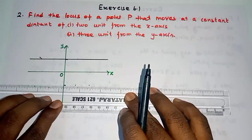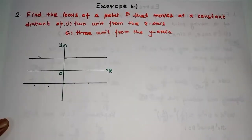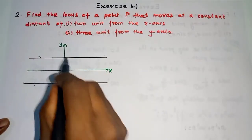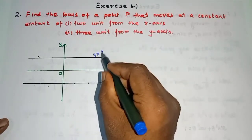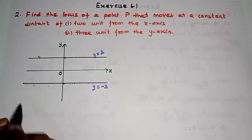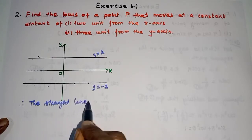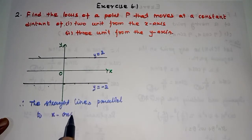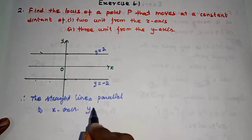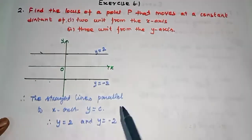In the line, we have two units upward and downward. So it is y is equal to plus 2 and y is equal to minus 2. Therefore, the straight line is parallel to the x-axis. A line parallel to the x-axis has the standard form y is equal to c. So y is equal to 2 and y is equal to minus 2 — we have two straight lines parallel to the x-axis.